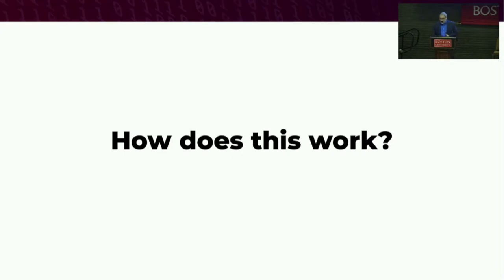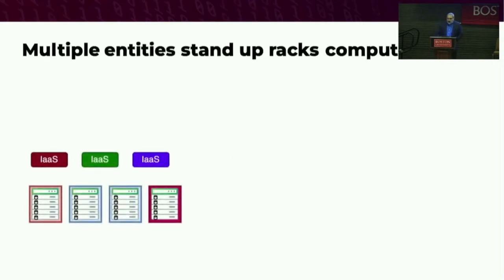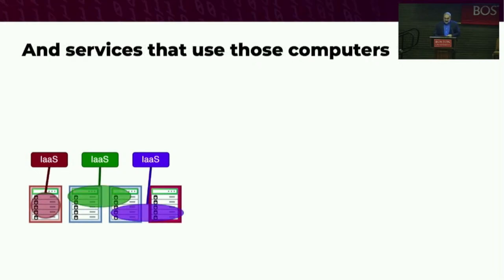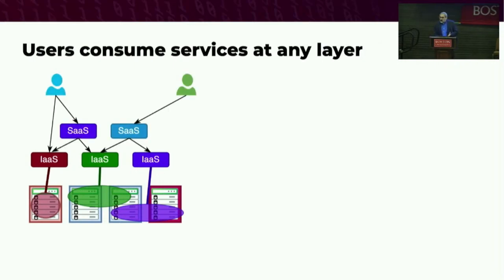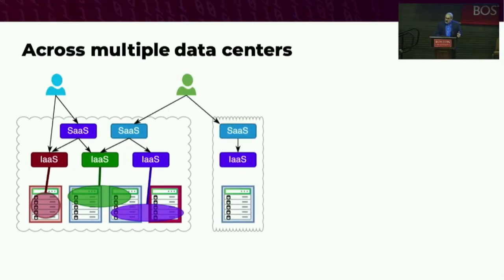So how does all this work? Multiple entities stand up racks of computers in our facilities, and computers that can be easily shifted between workloads are allocated to various services delivered as infrastructure as a service. Higher-order services are built on top, and users consume those services at any layer across the multiple data centers.